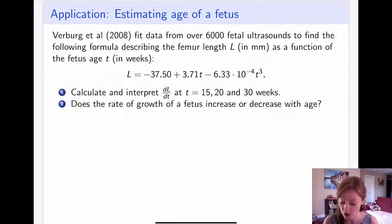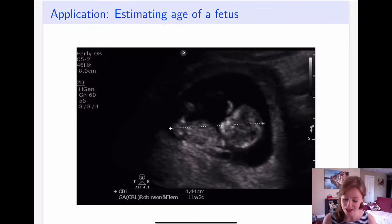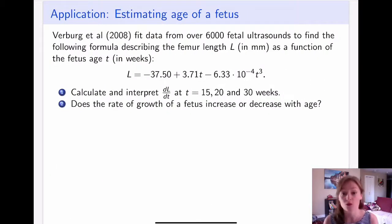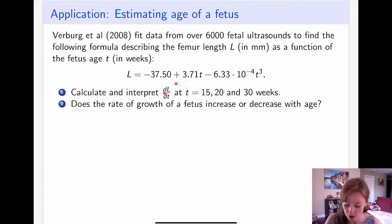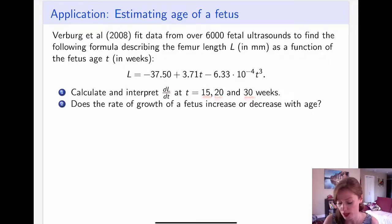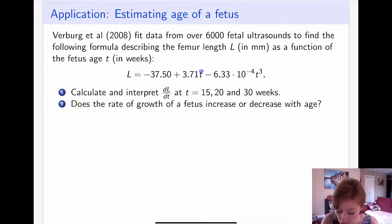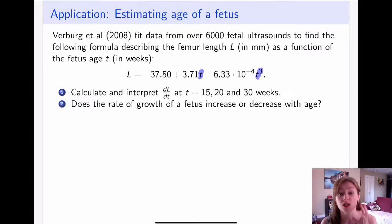Now let's apply these rules. My favorite application is estimating age of fetus growth — I showed you this formula last time. We approximated the derivative before; we're now going to compute it exactly using differentiation rules. The first part asks us to calculate and interpret the derivative of L with respect to T at different points in time: at 15, 20, and 30 weeks. The function L is a cubic polynomial in T.